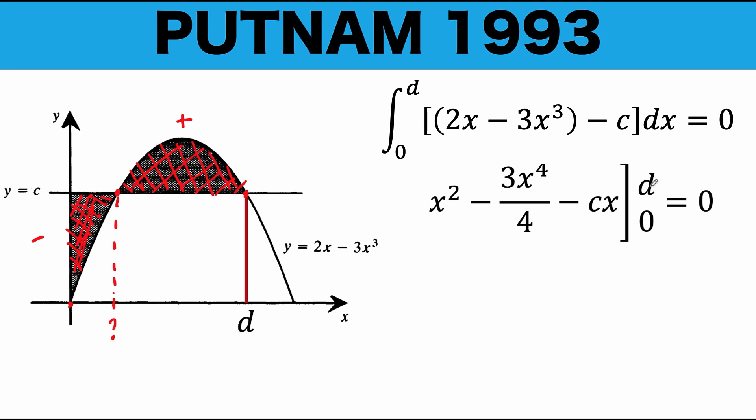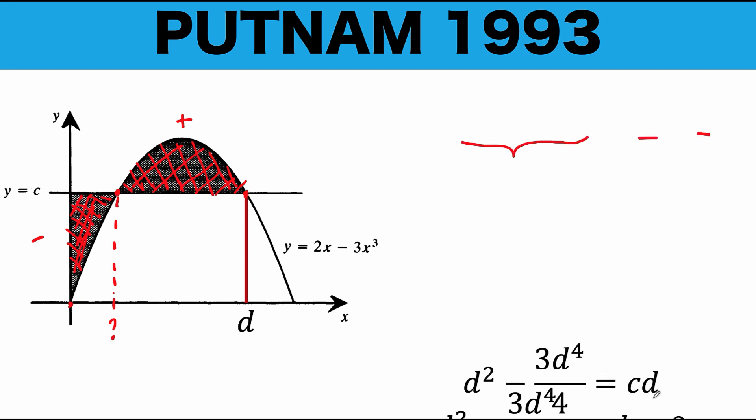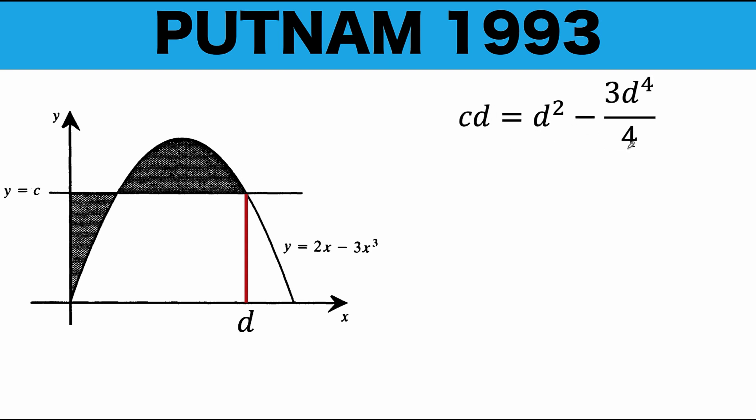Now, substituting the value of d and 0 for x, we now evaluate this definite integral as d squared minus 3d to the fourth over 4 minus cd. Then, simplifying this algebraic expression, let's add cd to both sides of the equation. Then, let's solve this equation for c. Let's interchange the left side and the right side of the equation and divide both sides by d to arrive at c equals d minus 3d cubed over 4. Let's remember this value.